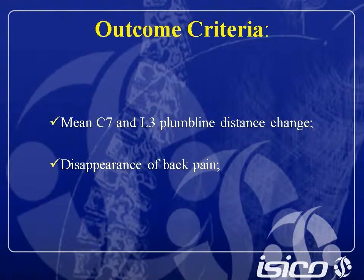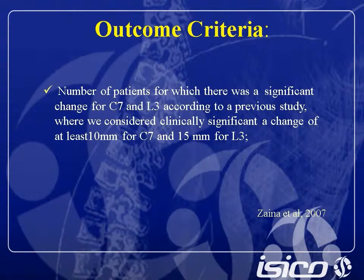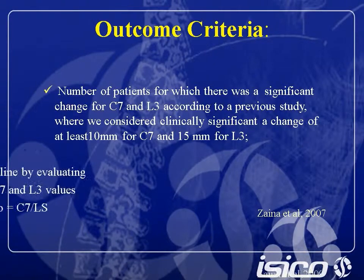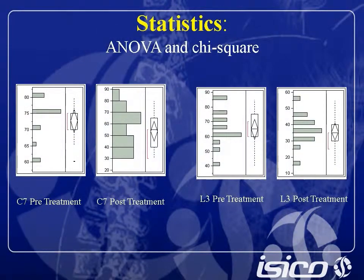As outcome criteria, we considered the C7 and L3 plumb line distance change and disappearance of back pain. A change of at least 10 millimeters for C7 and L3 was considered clinically significant, according to previous studies. We also considered proper reconstruction of the sagittal outline, evaluating the sagittal index — which describes the overall sagittal profile of the spine — and the sagittal ratio, which explains the relationship between the upper and lower parts of the spine.